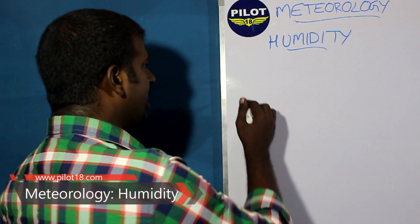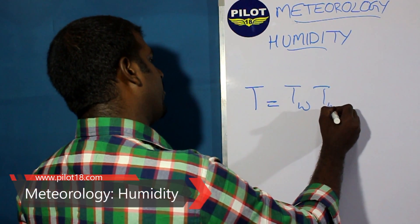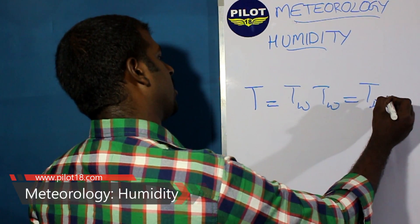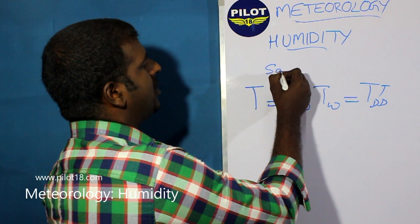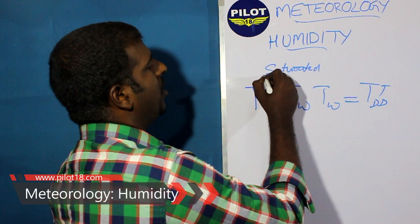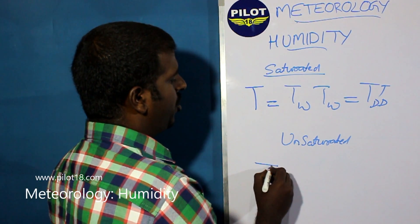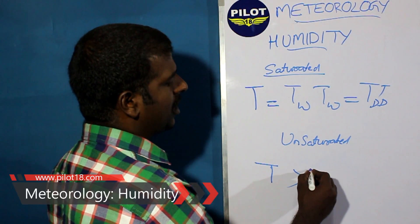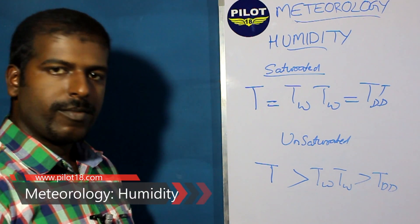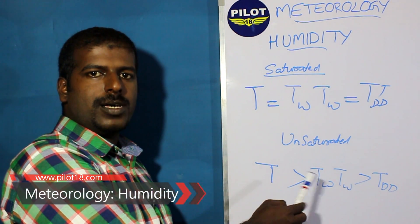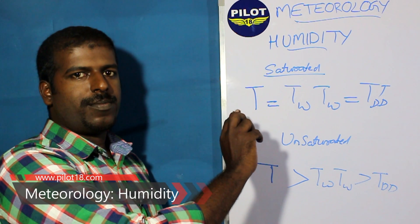To summarize the temperature relationships: when the air is saturated, true air temperature equals wet bulb temperature equals dry bulb temperature. When the air is unsaturated or moist, true air temperature is greater than wet bulb temperature, which is greater than dew point temperature. The saturated condition is when the desert cooler won't work; the unsaturated condition is when it works.